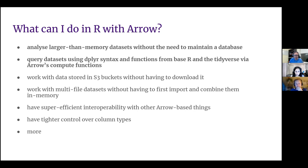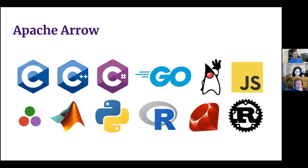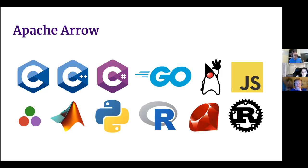From a data engineering point of view you can have much tighter control over column types and things like that. This isn't exhaustive — it's just from my perspective as someone who's done quite a bit of data science work. There are lots of different implementations of Arrow across many languages — Spark has some Arrow integration already — but the real focus today is on the R package.